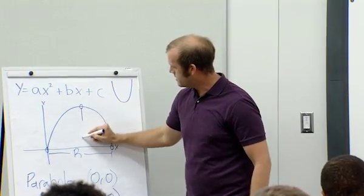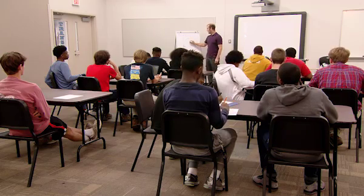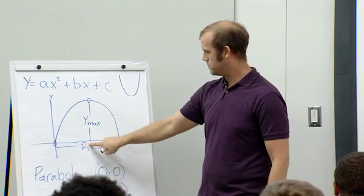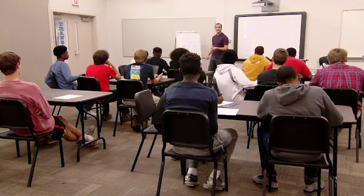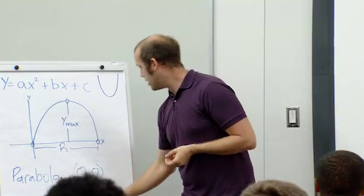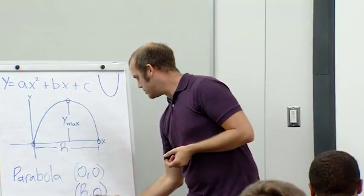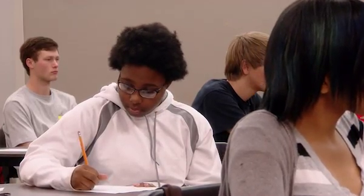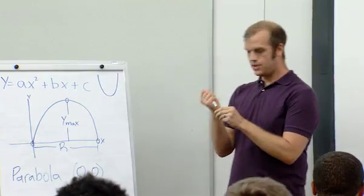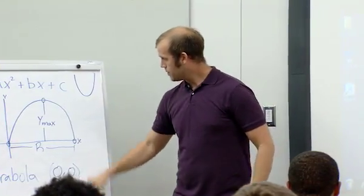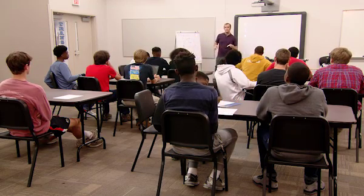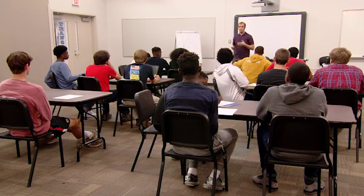What would you call this distance to the top? We're going to call that y-max. At the top, x is r over 2 — half of r. A projectile is going to reach its maximum height at half the distance. So that point is (r/2, y-max). If we use those three points and substitute the x and y values in, we can actually find out what a, b, and c are, and determine the exact parabolic path of our projectile.